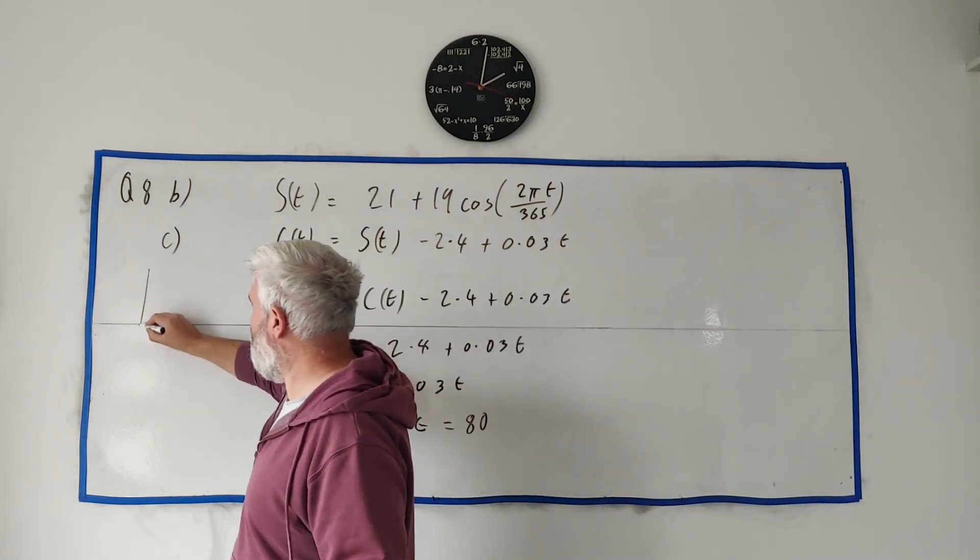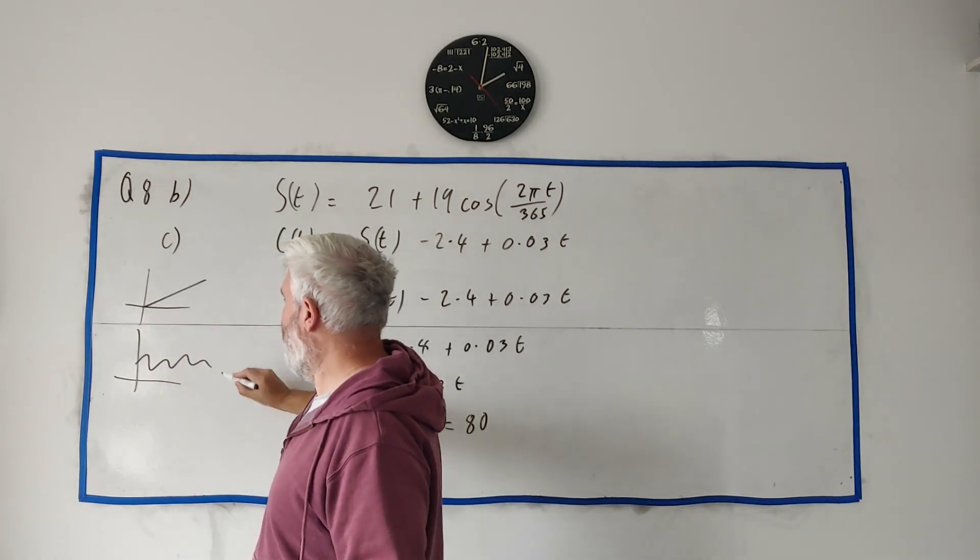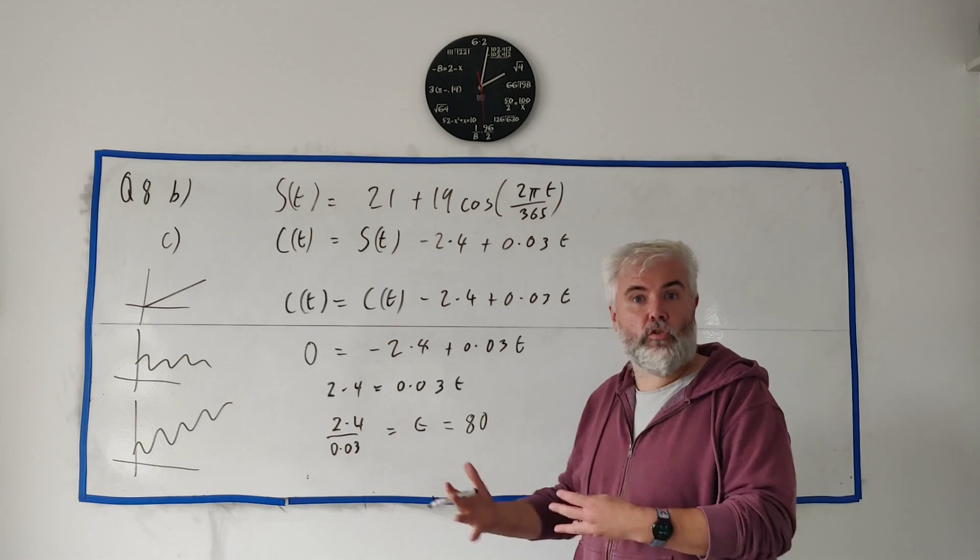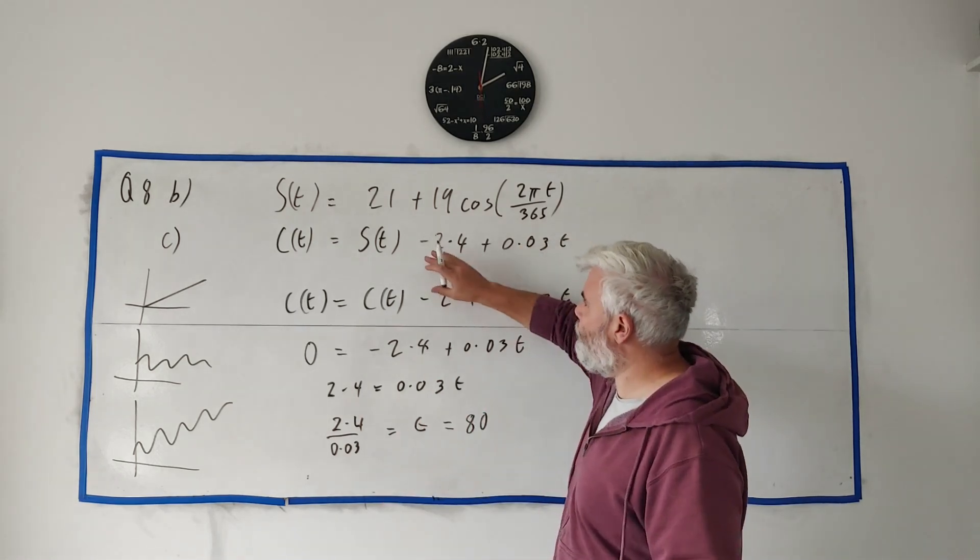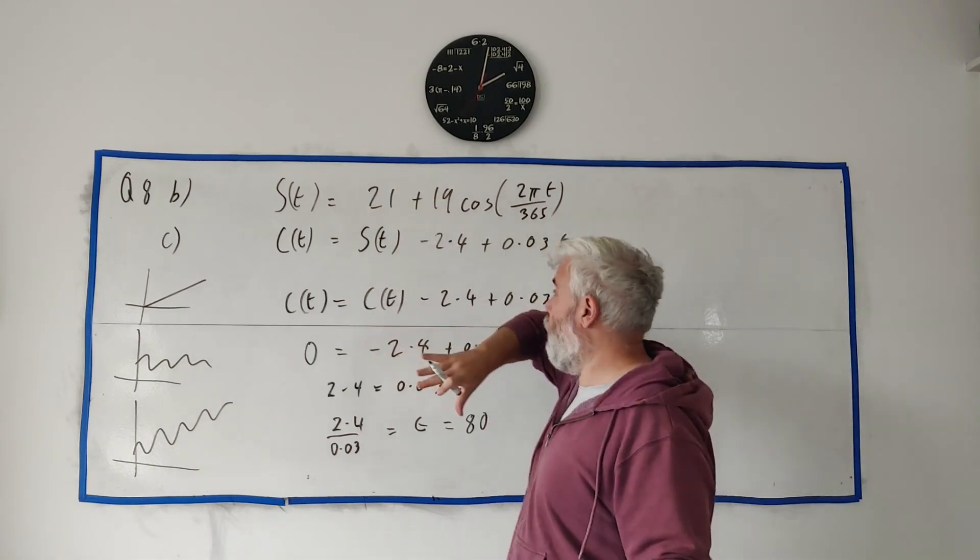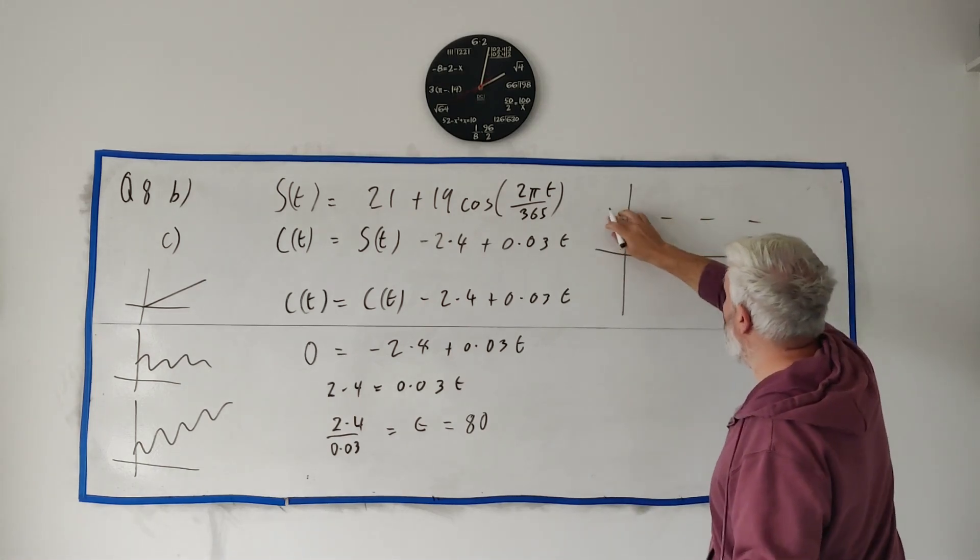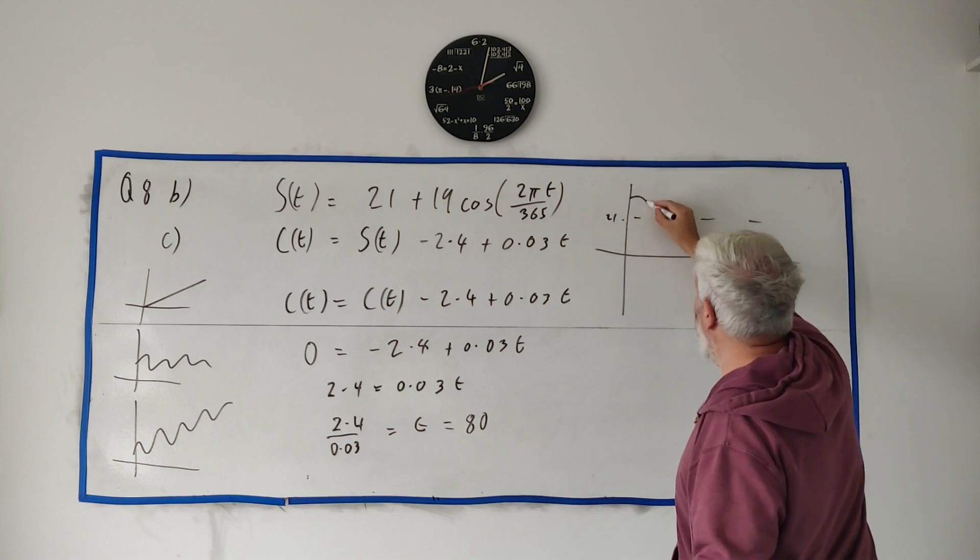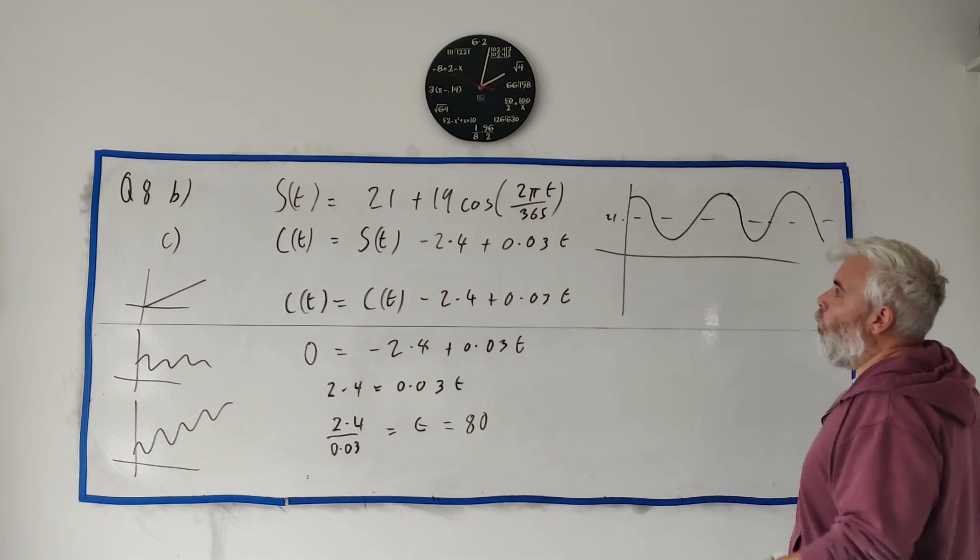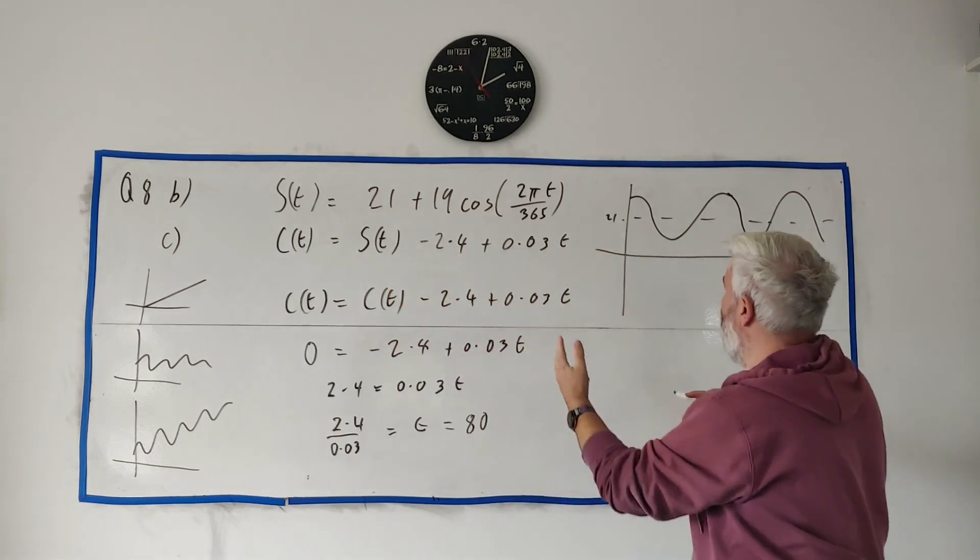Okay, part D. They give us three drawings. One that looks like that. One that has a sine function like that. And another that has a sine function going up like that. And they ask us, which of those does C(T) look like? Now, I already went through how to draw S(T) earlier on. And that should be useful to us. So, let's draw S(T) again. Remember, we had a centre line of 21. And it went around it like that. And let's continue it on. Around it like that.